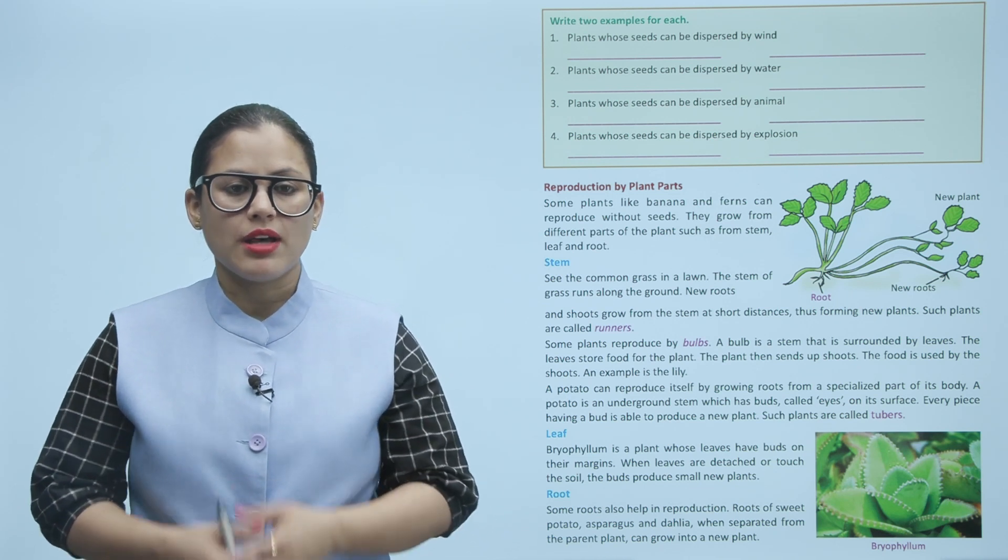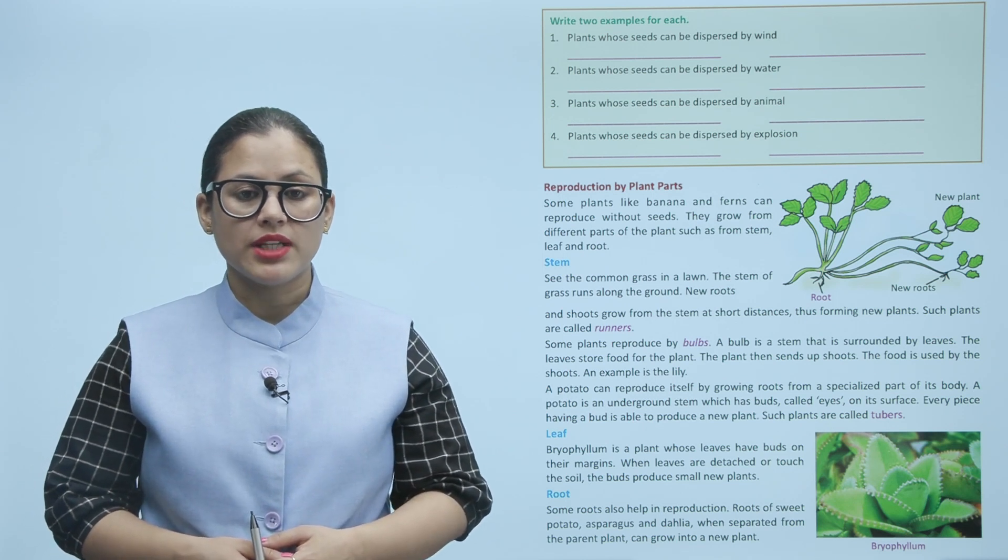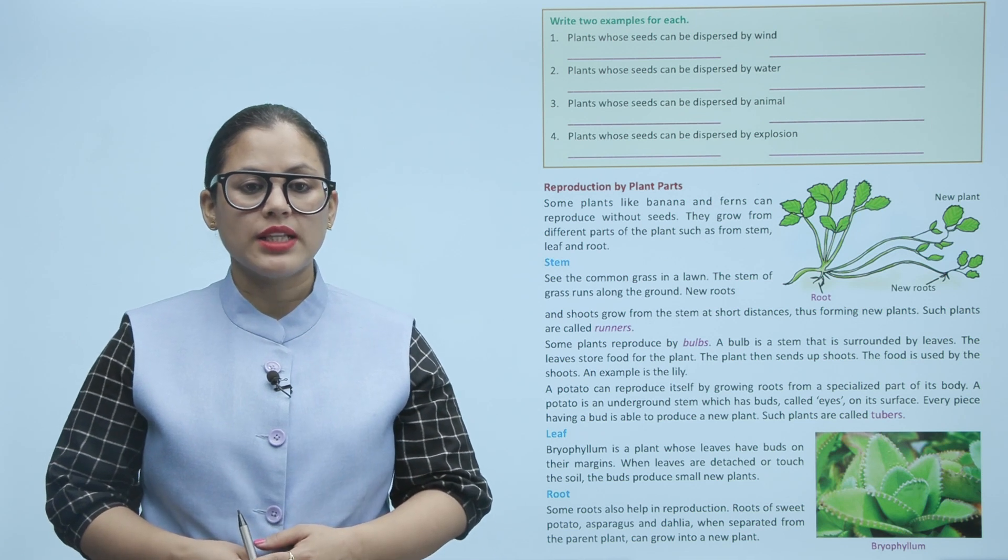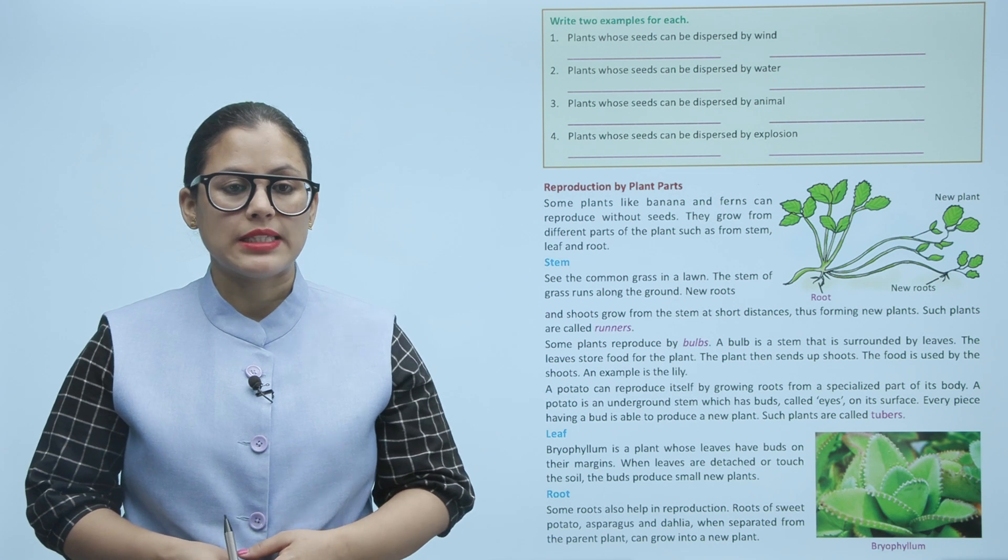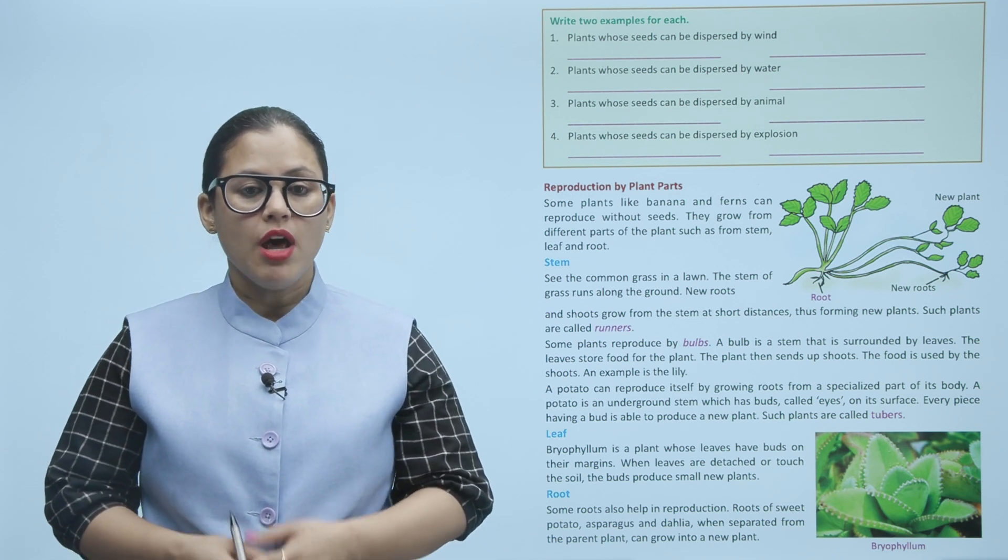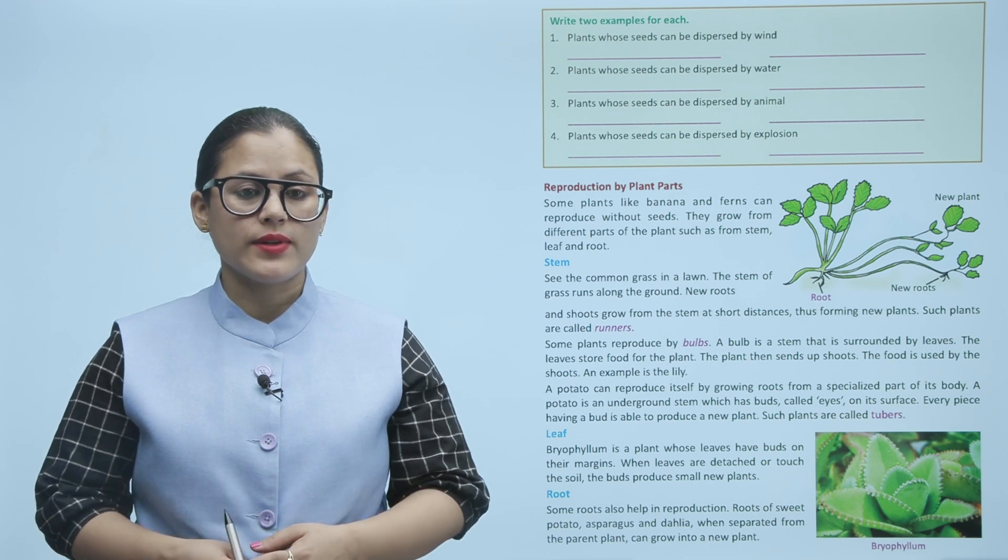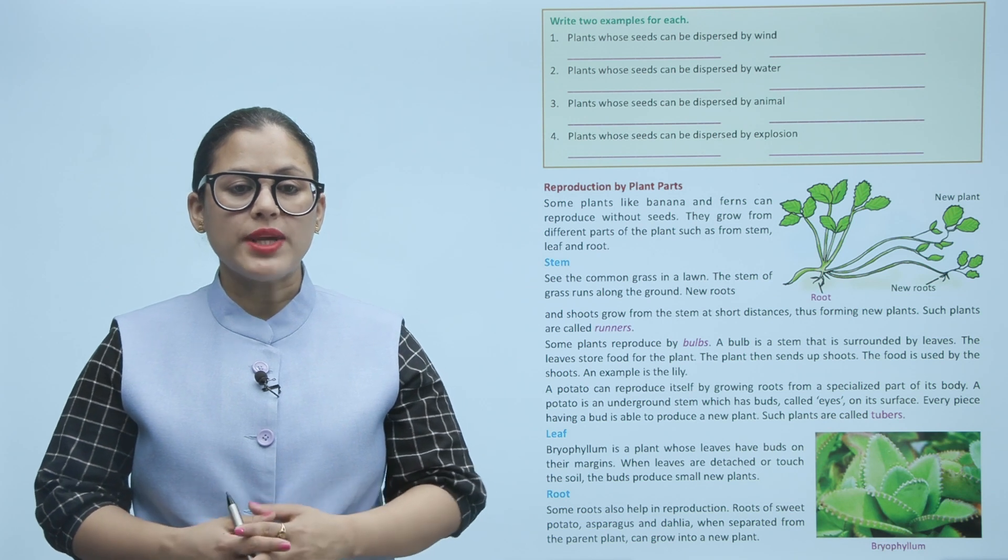New roots and shoots grow from the stem at short distances, thus forming new plants. Such plants are called runners. Some plants are reproduced by bulbs. A bulb is a stem that is surrounded by leaves. The leaves store food for the plant. An example is the lily.